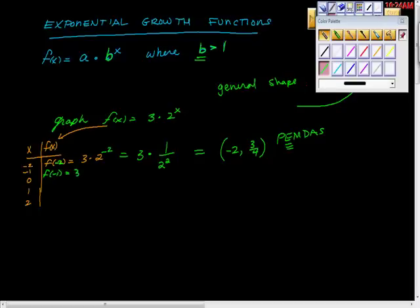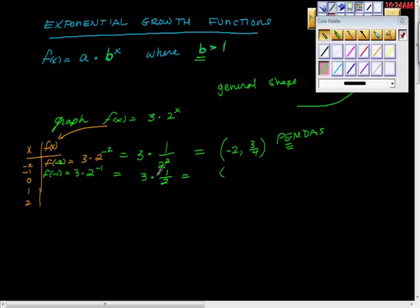Now f(-1) looks very similar: 3 times 2 to the negative 1. We know we can't multiply those first. Two to the negative 1 — negative exponents cause fractions — so it's one-half. Three times one-half is three-halves. The x value was -1, so our point is (-1, 3/2).